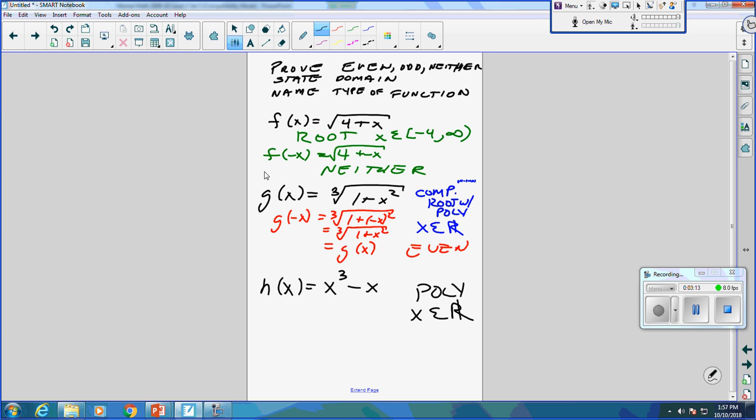We know it's continuous everywhere, because it is a polynomial. It's all real. We know it's continuous everywhere, and it exists everywhere. Now we put in negative x, because we want to prove it.